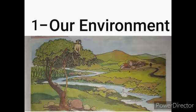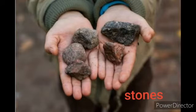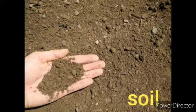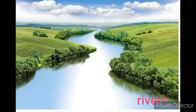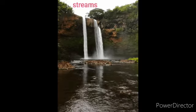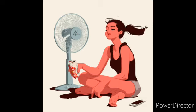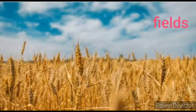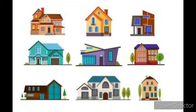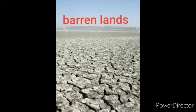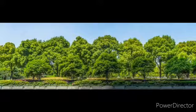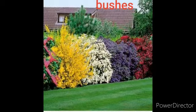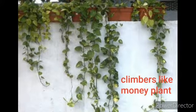Listen first, our environment. There are many things around us; they are from the environment. There are stones, rocks, soil, rivers, streams, lakes, air, hills, mountains, jungles, fields, houses, roads, barren lands, animals, birds, trees, bushes, and small trees.